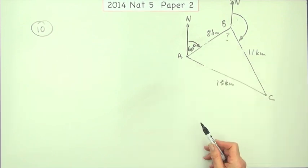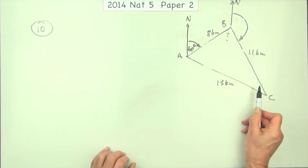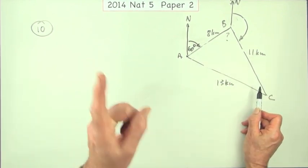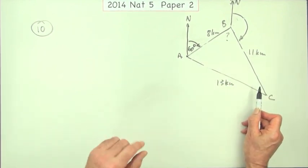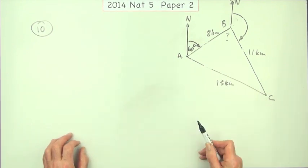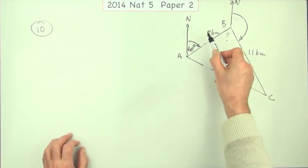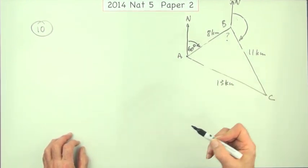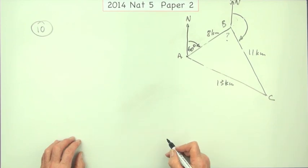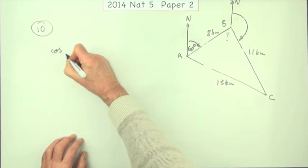So how do I find this angle? I don't know any angles to begin with, so it's not the sine rule — that always uses an angle with opposite pairs. Here, I've got all three sides, so it's the cosine rule in reverse.